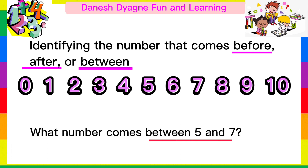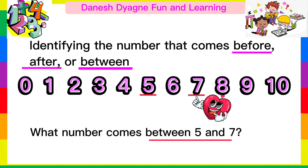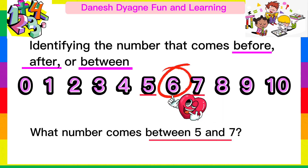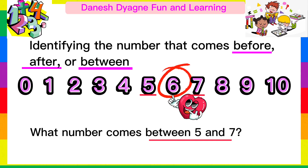In the above number sequence, what number comes between 5 and 7? The correct answer is 6.